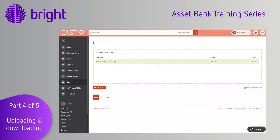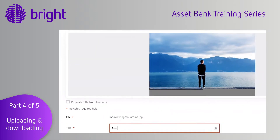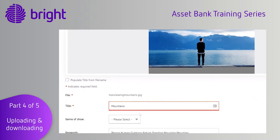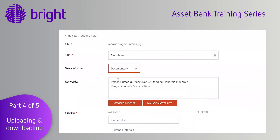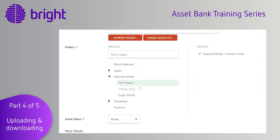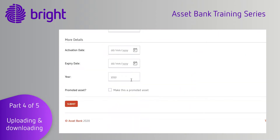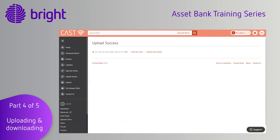On this page you'll be able to add information, also known as metadata, about your asset. These information fields or attributes can be customized by your administrators. Make sure you add your metadata accurately and consistently — it's central to making your assets easy to find and reuse in the future. When you've added the required metadata, click done. Your asset has now been uploaded.